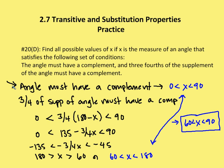For the first condition — the angle must have a complement — X must be between 0 and 90 degrees, because the complement brings the angle to 90 degrees. For the second condition, three-fourths of the supplement of the angle must also have a complement. That means three-fourths of (180 minus X) must be between 0 and 90 degrees. Solving for X gives us that X must be between 60 and 180 degrees. So we have two restrictions: X between 0 and 90, and X between 60 and 180.